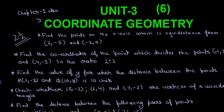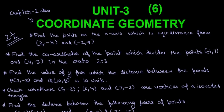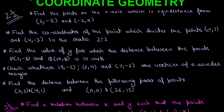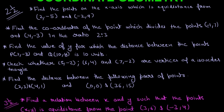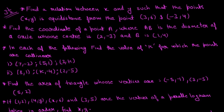Now let's move on to Unit 3, which is Coordinate Geometry. It has only one chapter, which is Coordinate Geometry itself, and the weightage of this unit is 6 marks. The 2.5 mark questions asked from this unit are these, and they are really important. The 3.5 mark questions asked were these.